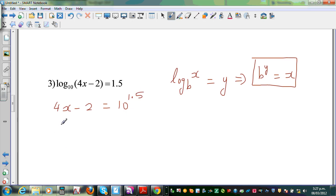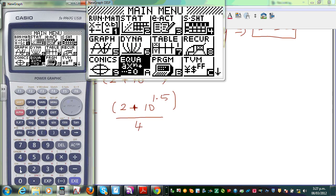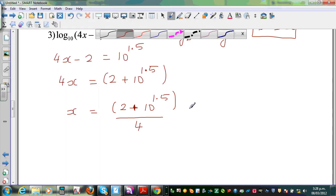So this is 4x. I'm adding 2 to both sides. So 4x is 2 plus 10 to the power 1.5. I'm going to divide both sides by 4. So x is 2 plus 10 raised to 1.5 divided by 4. So I'll put this in the bracket. 2 plus 10 raised to 1.5, close the bracket, divide by 4, which is 8.41. So x is 8.41 in two decimal places.